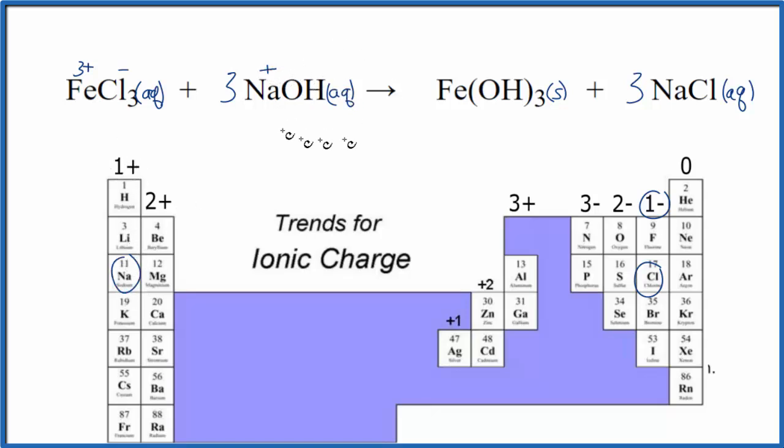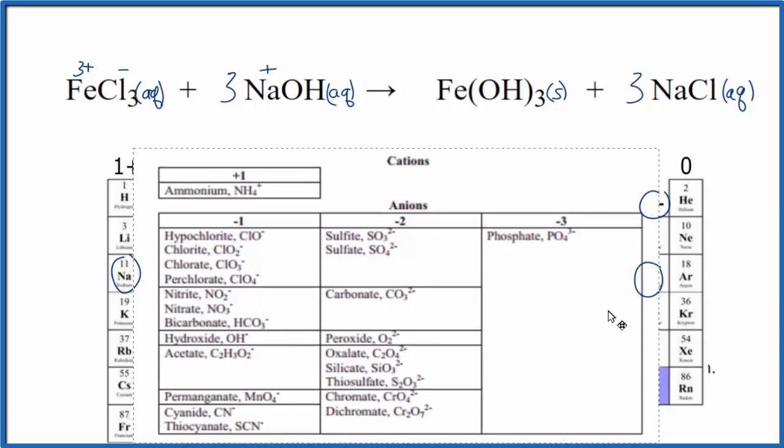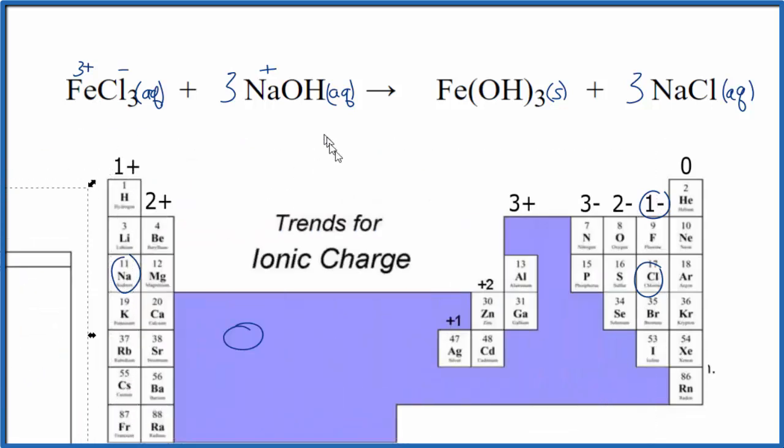And then the hydroxide, that's not on the periodic table. We can either have memorized that it has a negative charge or we could look on a table of common polyatomic ions. Here's the hydroxide, it's got that minus charge. So we can use that. And that's going to be minus. So we've got these charges here.